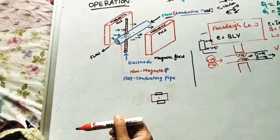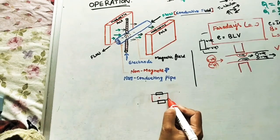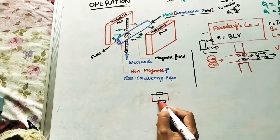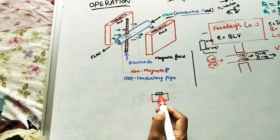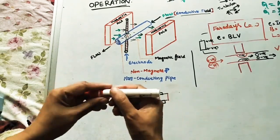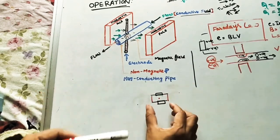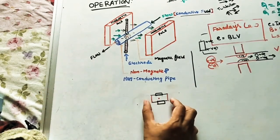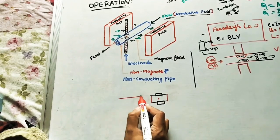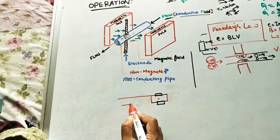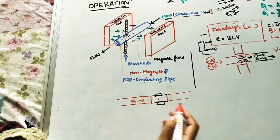Instead of these separate parts, this flow meter comes as a compact unit. It is a small pipe with magnets fixed on it. The terminals are perpendicular — one terminal on each side — connected to a voltmeter. This is the small part called the magnetic flow meter. Wherever we want to connect to pipes, we can easily connect it to find the Q value.